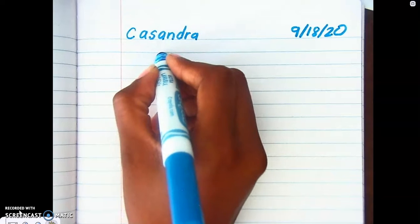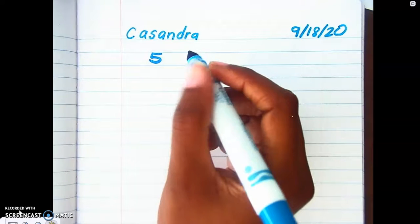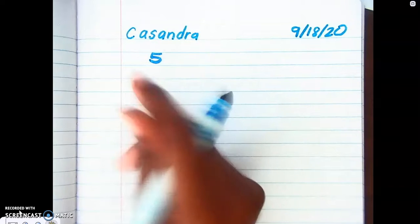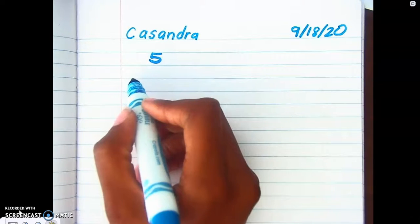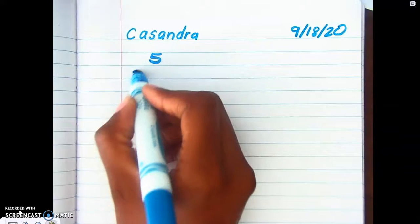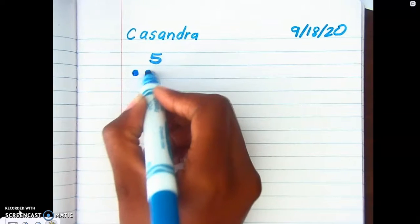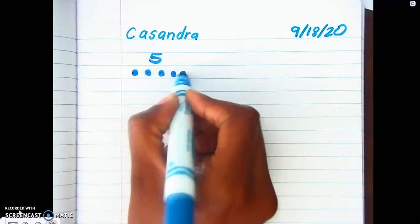So I'm gonna pick a number. Let's pick five. You're gonna pick a number between one through ten, okay? So I'm picking number five. And then you are going to draw dots to show your number, and we're gonna use this as our whole.